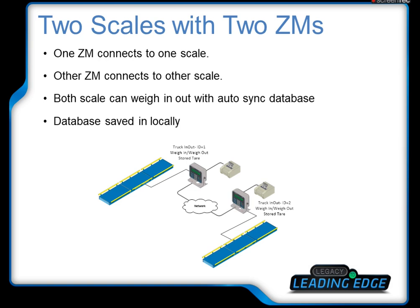The fourth type is two scales with two ZAM indicators. One indicator connects to one scale, and the other ZAM indicator connects to the other scale. Both scales can weigh in, weigh out, and print tickets. The database is saved locally — so if you use indicator one to weigh in and weigh out, the database is in indicator one. However, the database can be synced automatically, so you can use scale one to weigh in and either scale one or scale two to weigh out.